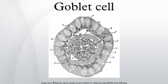The term goblet refers to these cells' goblet-like shape. The apical portion is shaped like a cup, as it is distended by abundant mucinogen granules. Its basal portion is shaped like a stem, as it is narrow for lack of these granules. There are other cells that secrete mucus, but they are not usually called goblet cells because they do not have this distinctive shape.